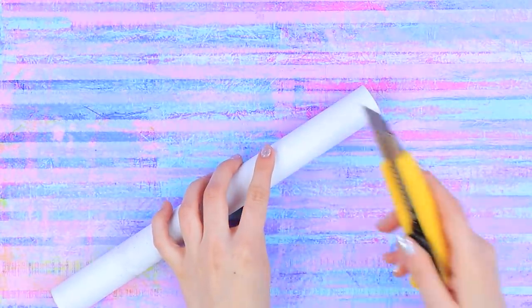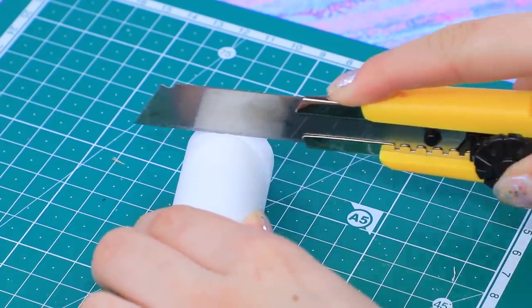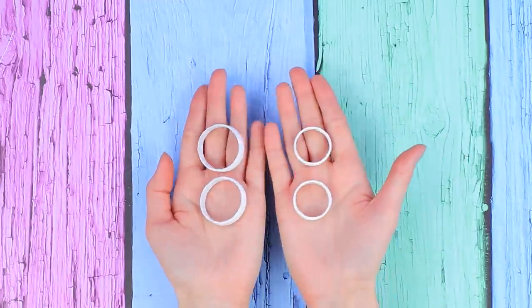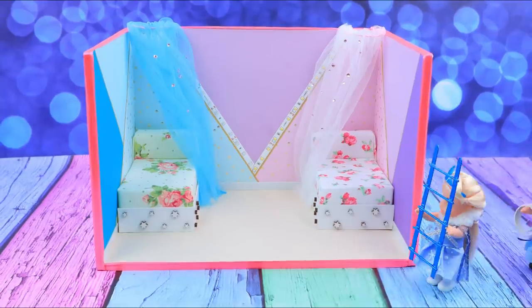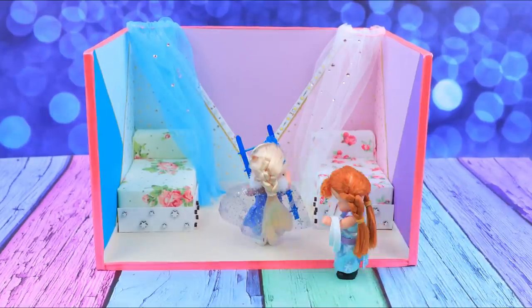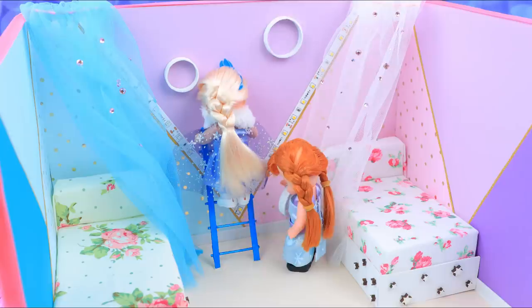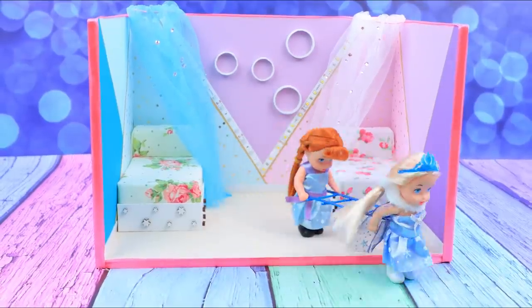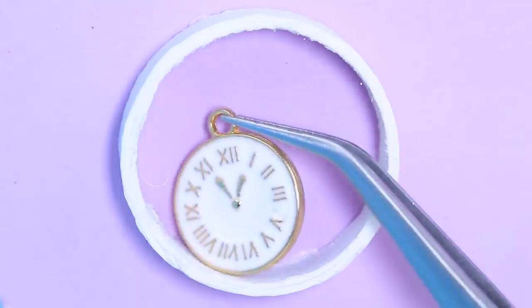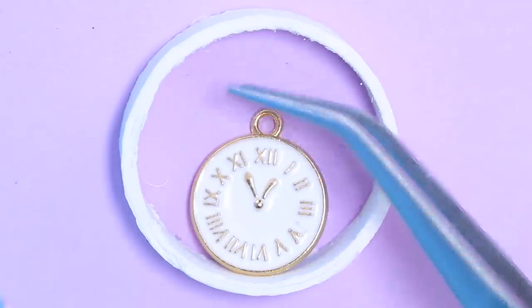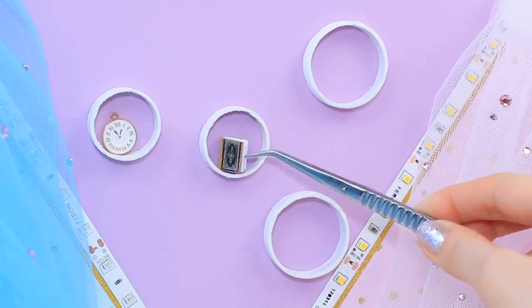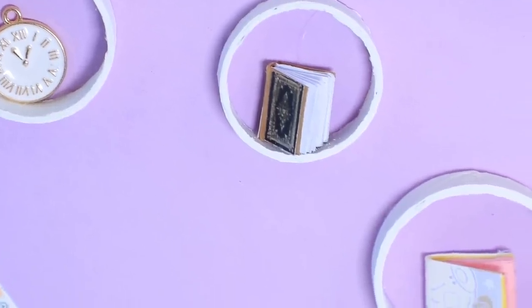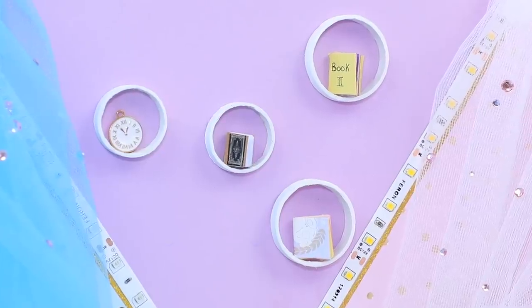Let's make wall shelves for little decorations. Use an empty plastic wrap roll. Cut a ring off it. Time to fasten the shelves to the wall. Put on different things that are precious to our girls. A clock, favorite book, a diary, and a sketch pad! Thanks Olaf for the sketches! Our room keeps on transforming!